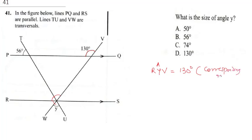Corresponding angles. Then we're going to get here will be RYV. That's here. RYV will be 180 minus 130. You call it angles on a straight line.